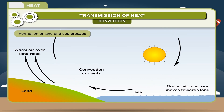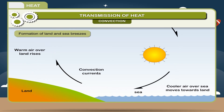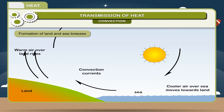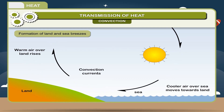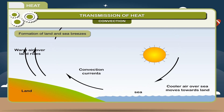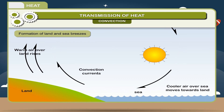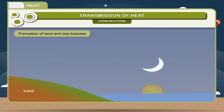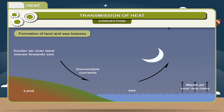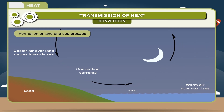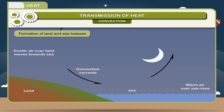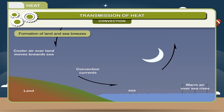Formation of land and sea breezes: during the day, land gets heated faster than water, hence hot air above land rises up and cold air above the sea being heavier takes its place — giving rise to sea breezes (wind blows from sea to land). At night, land cools faster than water; air above sea being warmer rises up and cool air above land blows out to sea — giving rise to land breezes.